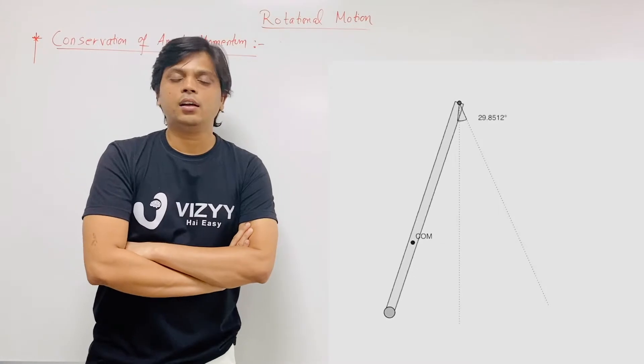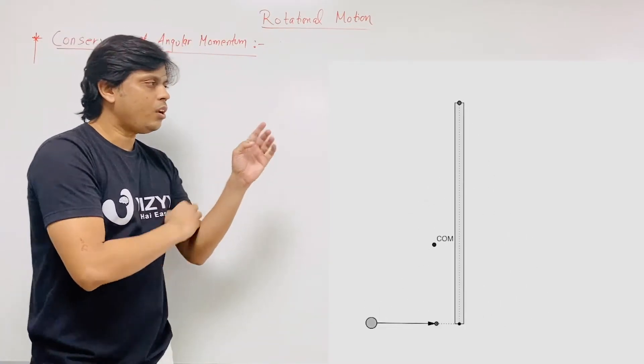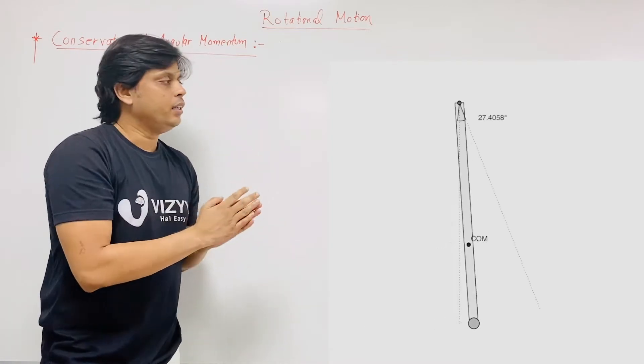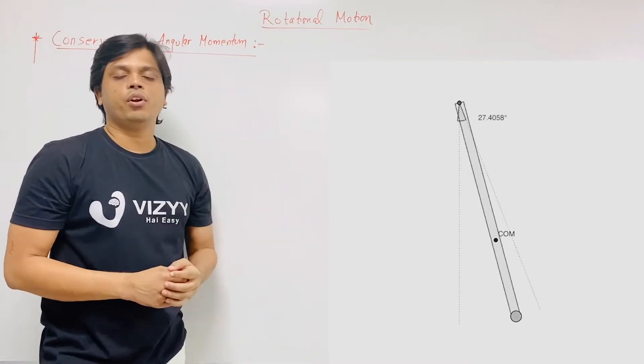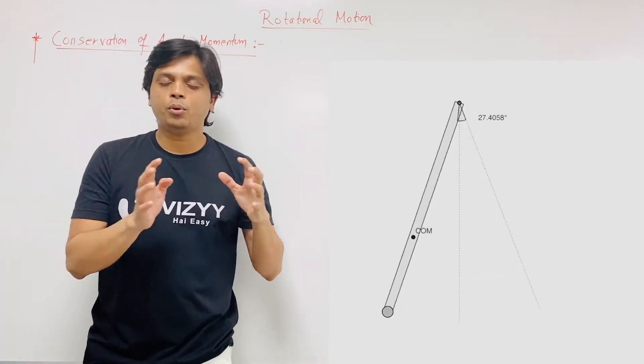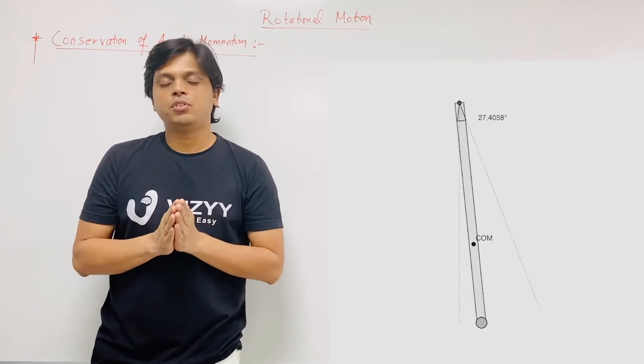It will have a rotational motion. Rod, see if the ball hits the rod then it will oscillate. Okay so now rod has some angular velocity. We have to find out this angular velocity. So hopefully you understand this animation. Next question starts.